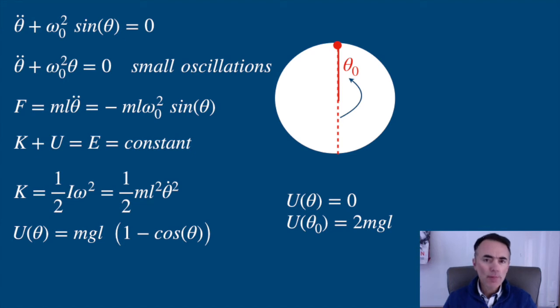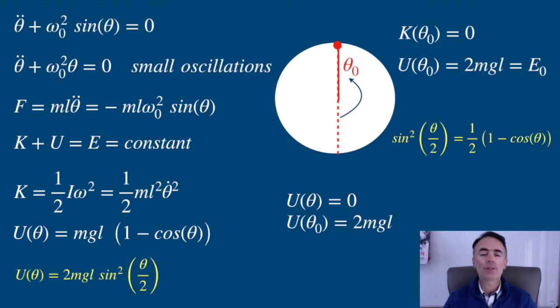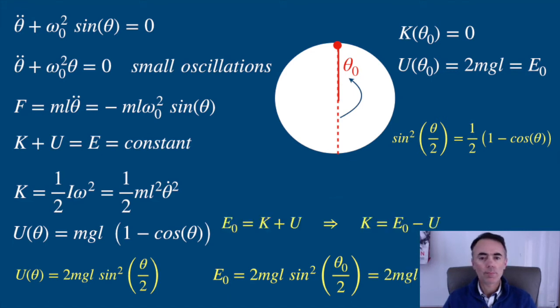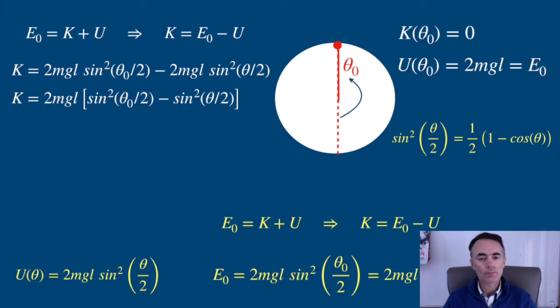So up there the kinetic energy is zero, and the potential energy is maximum, and equal to the total energy. Let me use some trigonometry to rewrite the kinetic and potential energies. From here, I can solve for the angular velocity.